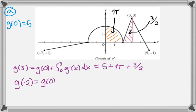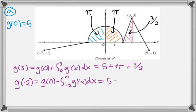For g(−2), same idea. g(−2) will be g(0) minus the integral from −2 to 0 of g prime of x dx. g(0) is still 5. We do this geometrically as well, and we get that the area of that region is π again, so we're going to subtract π, and those are our answers.